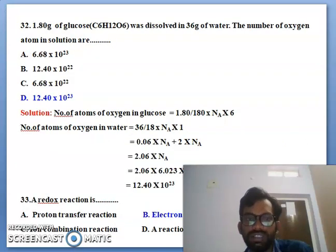Next one 32nd, 1.80 grams of glucose C6H12O6 was dissolved in 36 grams of water. The number of oxygen atom molecules in water. You can see here clearly, here is the correct answer: number of atom oxygen glucose 1.8 by 180 into Na into 6. You can see that this is the answer.